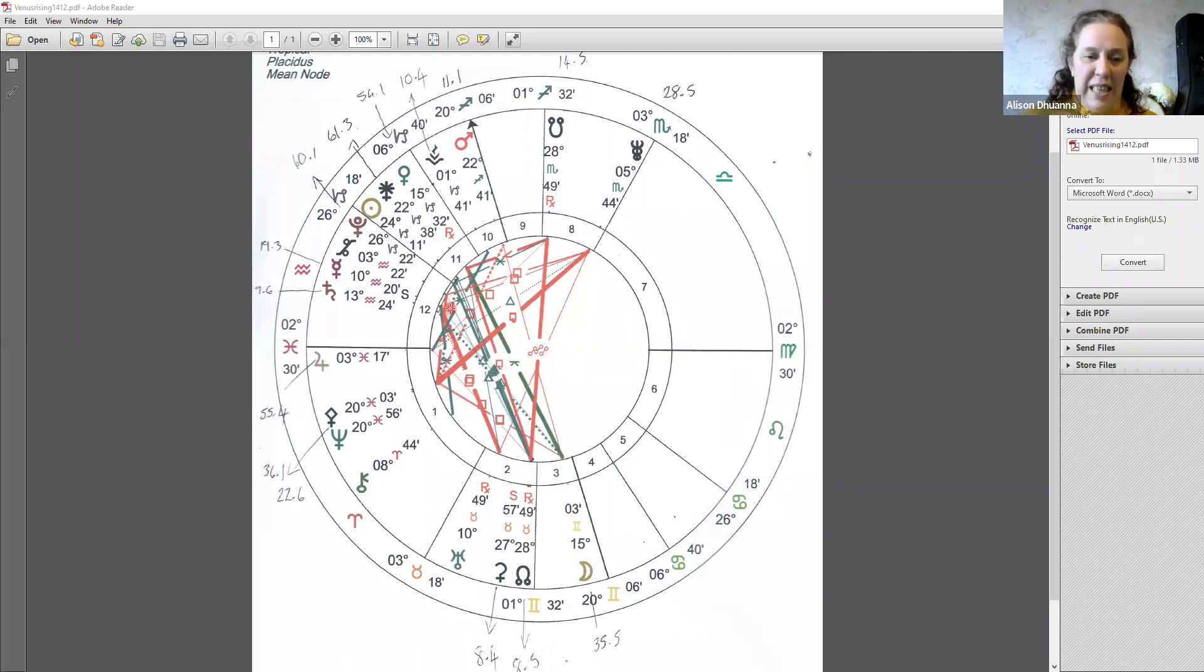Yeah, so Mercury is in gene key 19 line three and here we have Saturn there in Aquarius. We have Saturn is in gene key 19 line six. So this is the shadow of codependence and the gift of sensitivity and the siddhi of sacrifice. Sometimes a sacrifice needs to be made in order for us to move forward. Sometimes that's the ending of a way we may have been doing things for a long time and it feels hard to end it because it's like so ingrained in us and doing things a different way can feel really uncomfortable at that age of change.